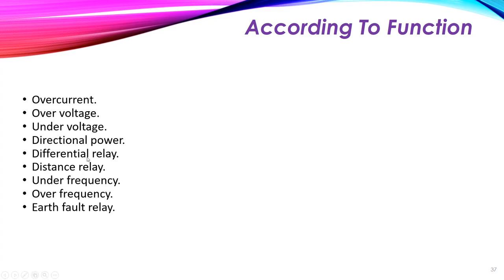The differential relay is used to detect internal faults inside a generator or transformer. The distance relay measures the impedance of the line and, based on that value, decides whether to trip the circuit — it is used to protect transmission lines. The under-frequency relay protects against frequency dropping below certain limits, the over-frequency relay protects against frequency exceeding certain limits, and the earth fault relay protects against earth fault occurrences inside the system.